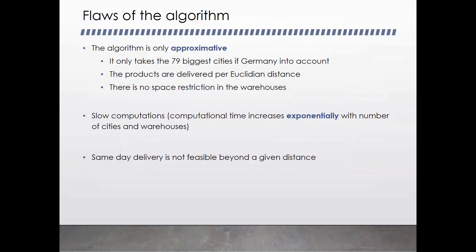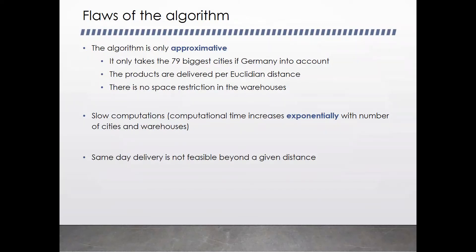There are some flaws in our algorithm. It is only approximative because it only takes the 79 biggest German cities into account — accounting for 35 million people instead of 80 million. Products are delivered per Euclidean distance, so just the air distance with no roads, no road works, and no traffic jams — always the easiest path. Furthermore, there is no space restriction in the warehouses, so a warehouse can't get full. You only need a new warehouse if the demand is high enough to justify building one.